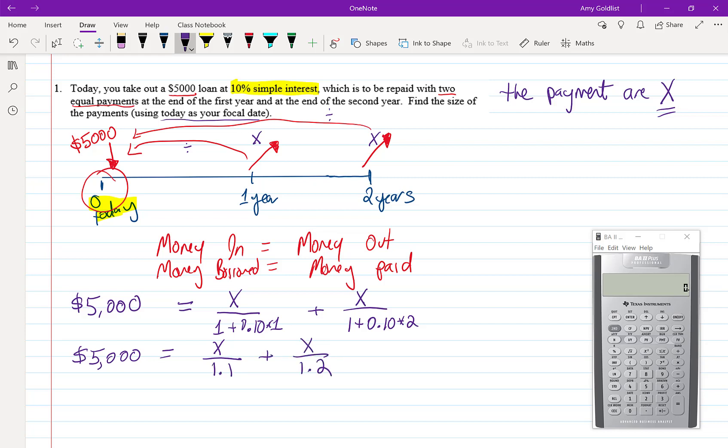Okay I'm gonna make this a little bit simpler. Now I have two different fractions on the bottom. I'm actually gonna move this over a little bit and you will see why. I have two denominators so what I'm going to do is multiply both sides by 1.1 and 1.2.